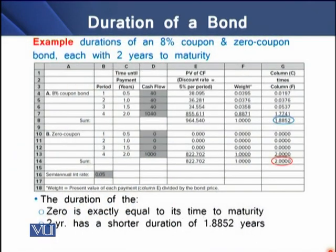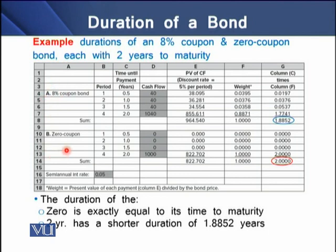To understand this duration, we have an example on the screen. We are finding the duration of an 8% coupon bond and a zero coupon bond, each with two years to maturity. The first half of the computation covers the 8% coupon bond and the second half covers the zero coupon bond. We have two years of semi-annual compounding, giving us four periods in all for both bonds.